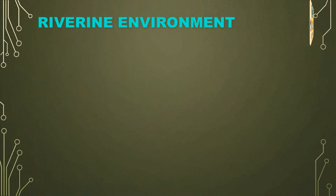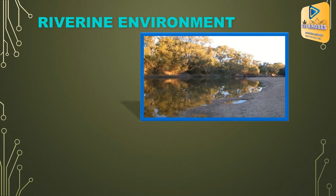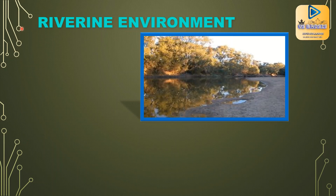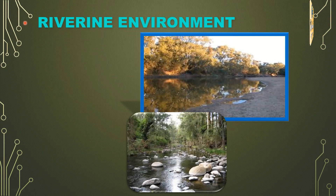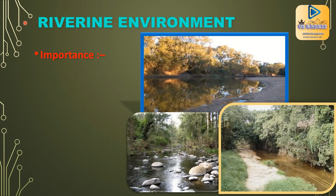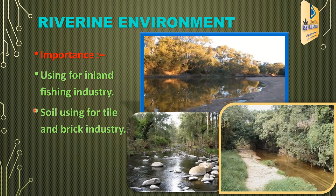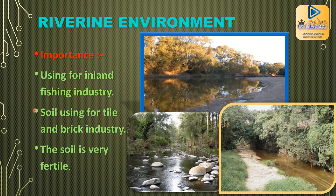The riverine environment: the environment on either side of a river up to the point where it flows to the sea is known as the riverine environment. An example is the Mahaweli floodplain in the east. Its importance includes use for inland fishing industry, and its soil is used for the tile and brick industry as it is very fertile.